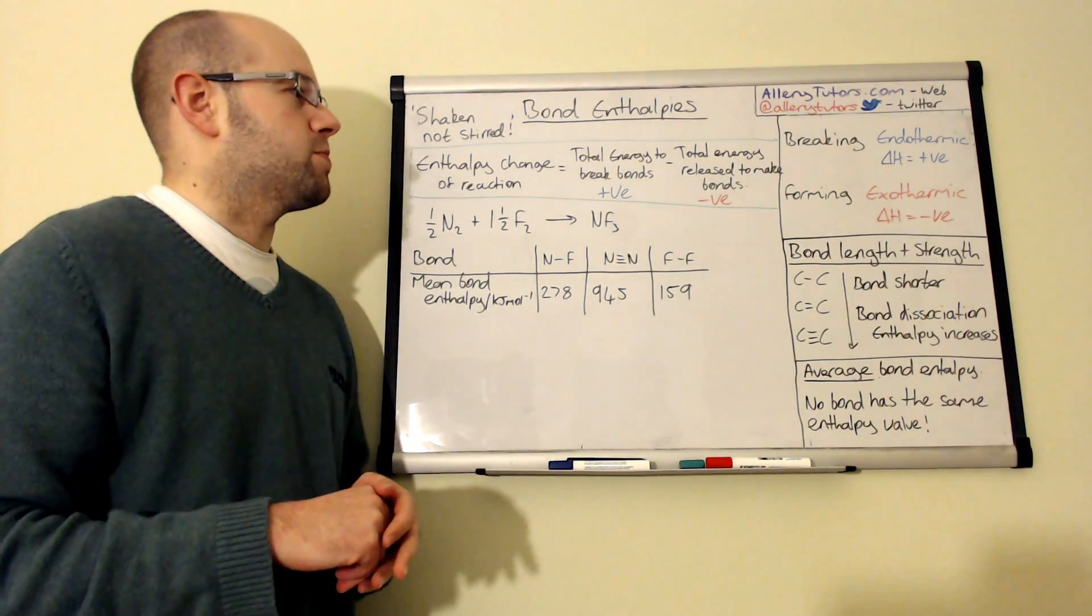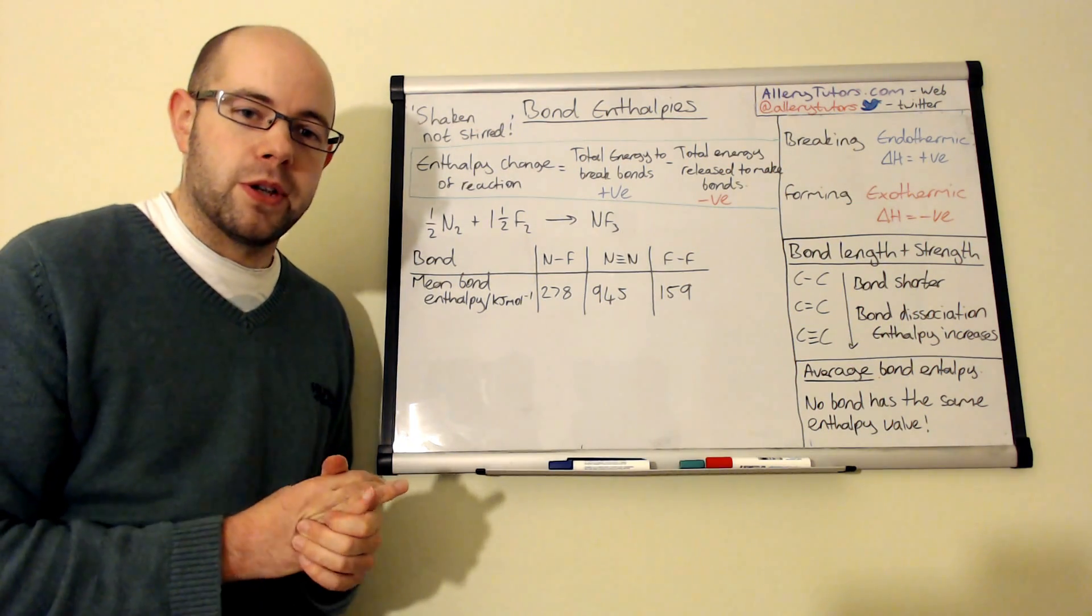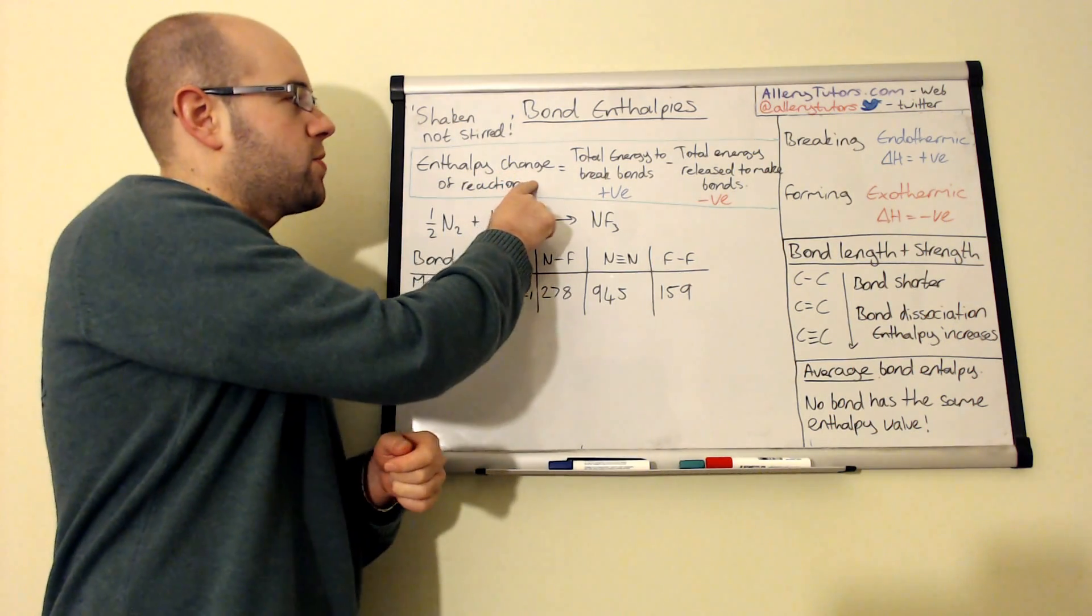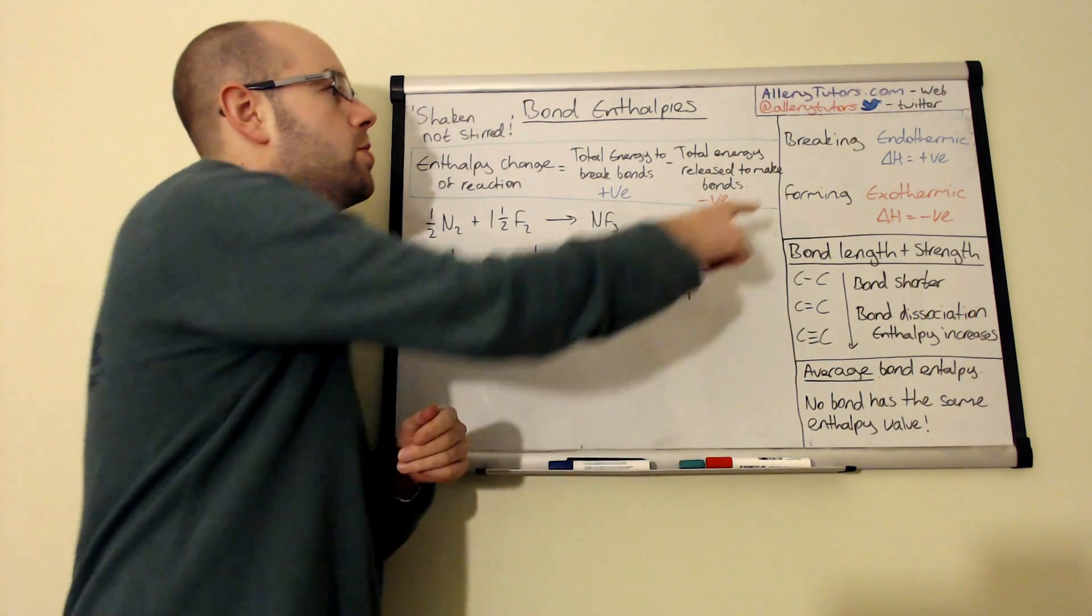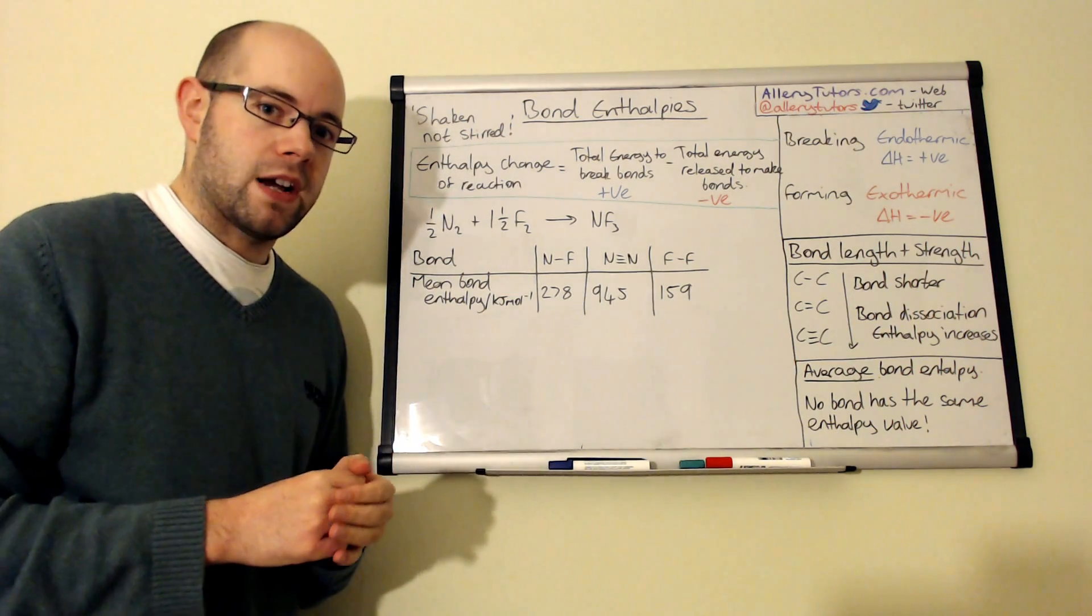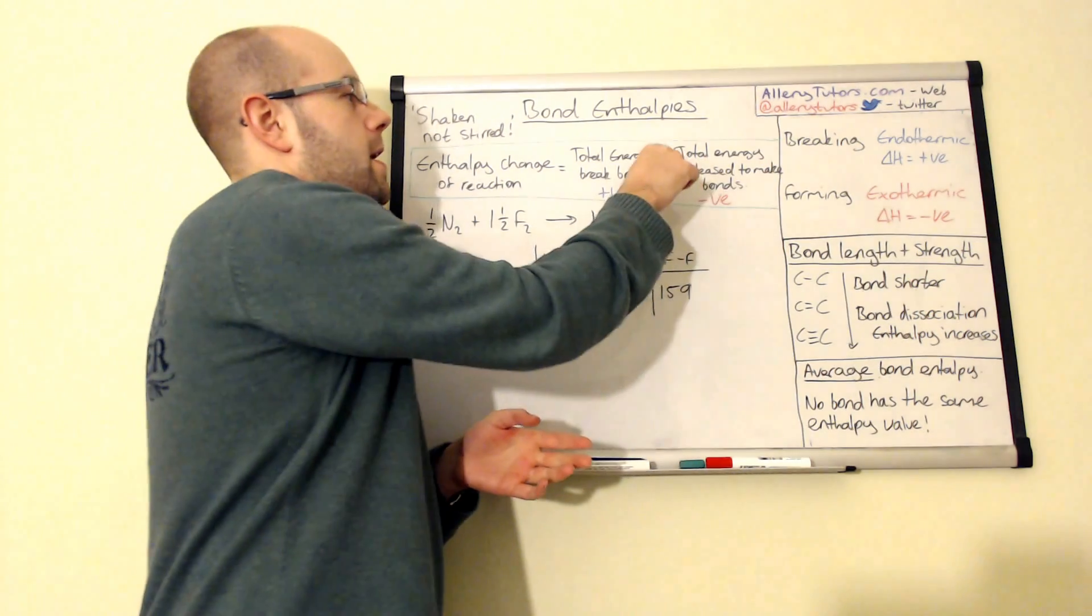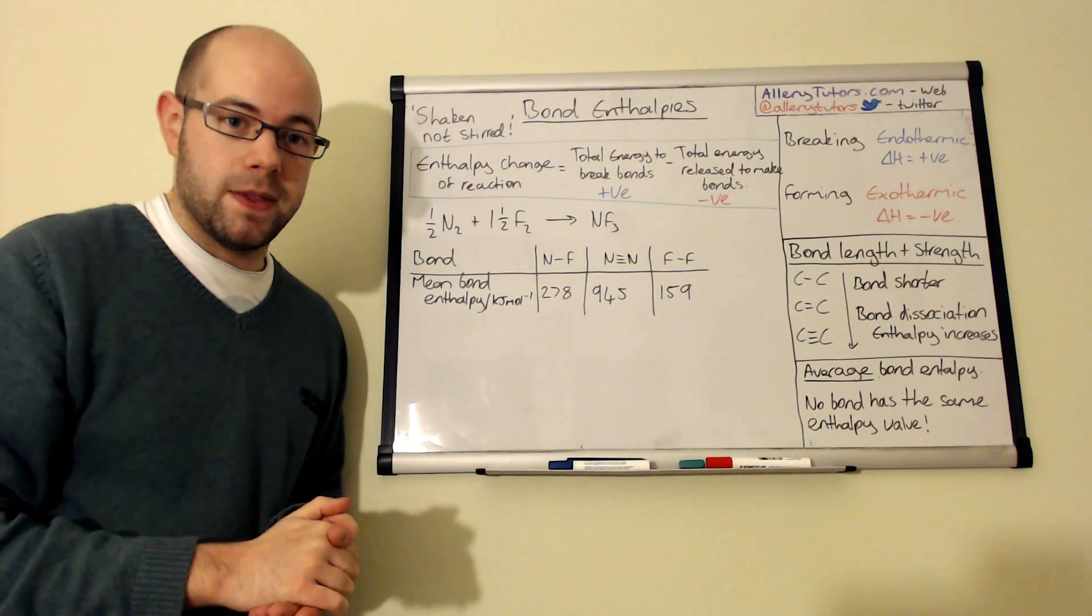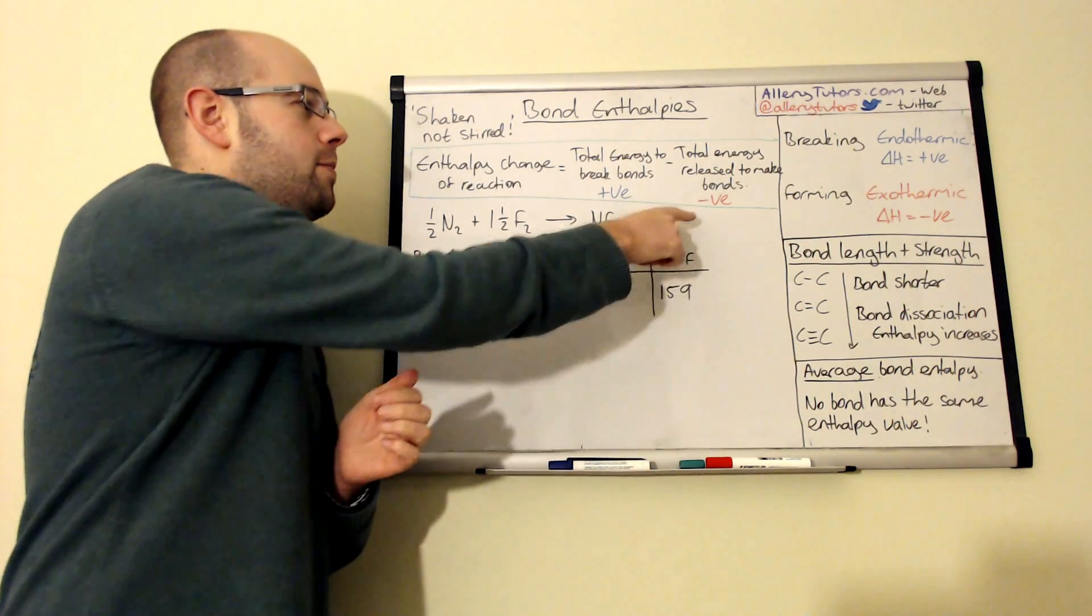Okay, so what we're going to do is we're going to look at calculating the enthalpy change of a reaction when you're given data to do with bond enthalpy. So you can see here that the enthalpy change of reaction is the total energy that's needed to break the bonds, and we know that this is an endothermic process because we need to put heat energy into our reaction and we give this a positive value. And we subtract this away from the total energy released to make bonds in the products, and we call this exothermic, and that's why we give it a negative value, which is over here.